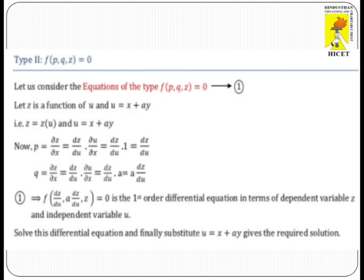We know that P equals dou Z by dou X, which can be written as DZ/DU multiplied by dou U/dou X. Similarly, Q equals dou Z by dou Y, which can be written as DZ/DU multiplied by dou U/dou Y.